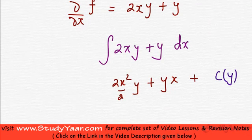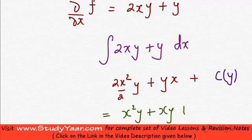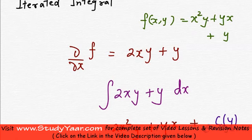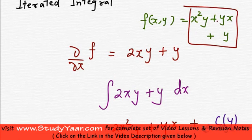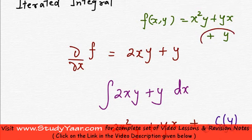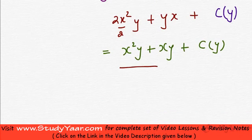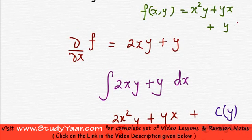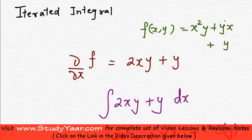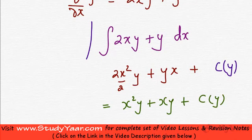You would see that this is equal to x squared y plus xy plus a function of y. We have partially recovered our original function: x squared y plus xy plus y becomes x squared y plus xy plus a function of y. We cannot recover that function of y, but we have partially recovered this function. So we can integrate a function assuming one variable as constant.